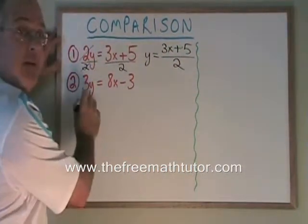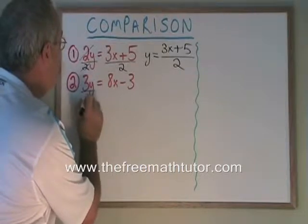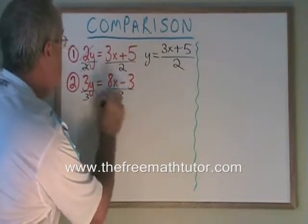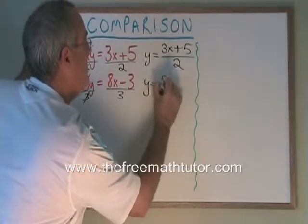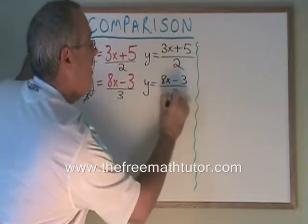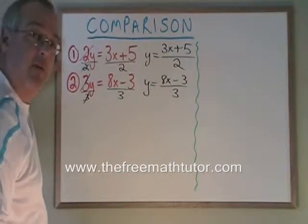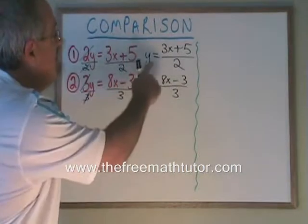If I do the same thing here, divide both sides of the equation by 3, these 3s cancel and I get y equals 8x minus 3 over 3.